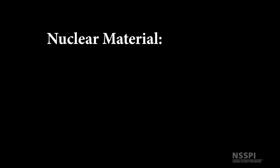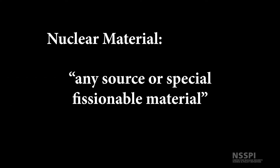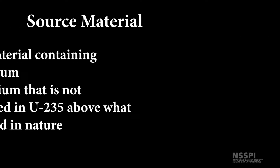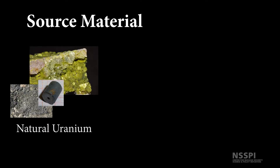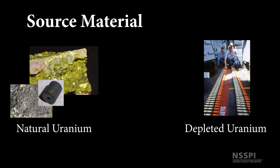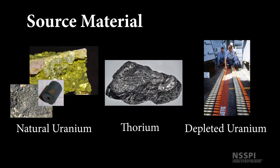The IAEA defines nuclear material as any source or special fissionable material. This covers all fissionable material. Source material generally refers to any material containing either thorium or uranium that is not enriched in uranium-235 above what is found in nature. So this would include natural uranium, depleted uranium, and thorium, and includes these in any physical or chemical form. It can also be a combination of these materials. It does not apply to ores or ore residue.